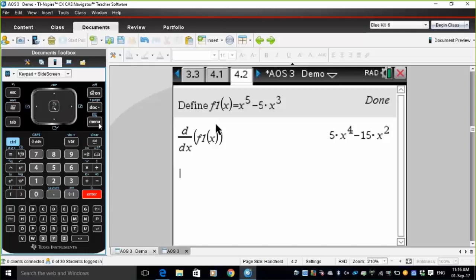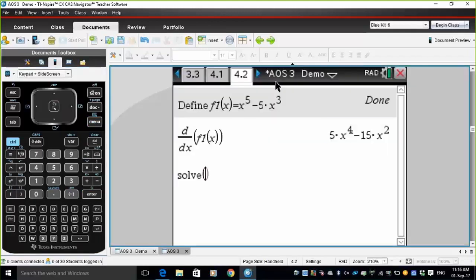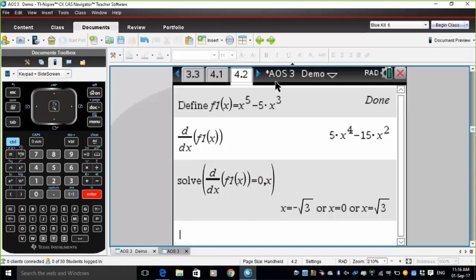So we want to find when the gradient is zero for turning points. So menu, algebra, solve. Solve where the gradient is equal to zero for x. That gives me three answers here, x equals minus root three, zero or root three.